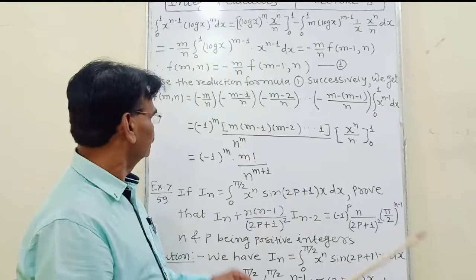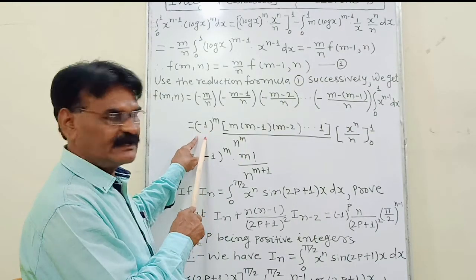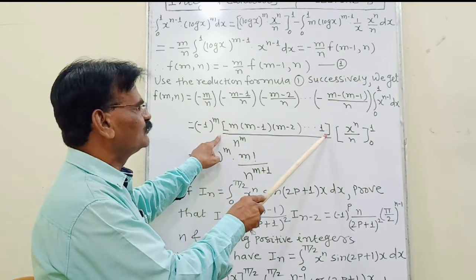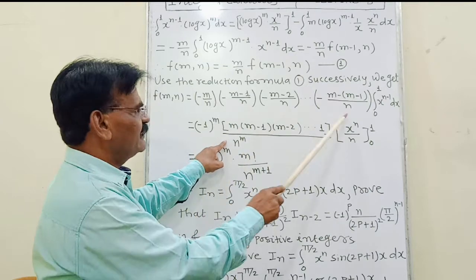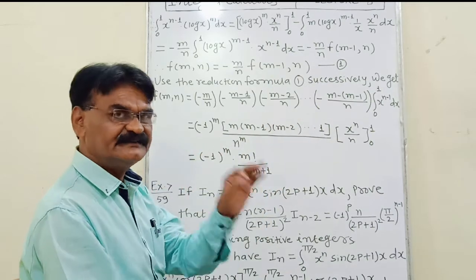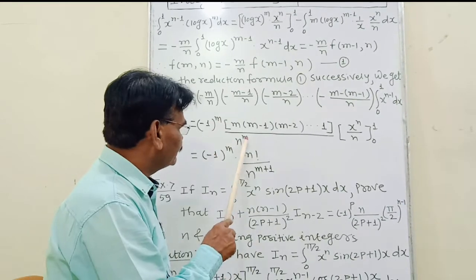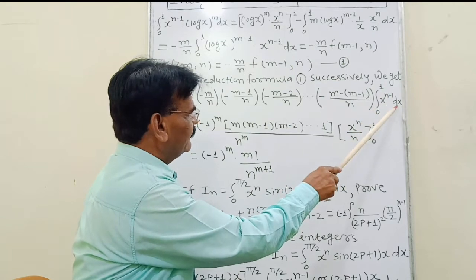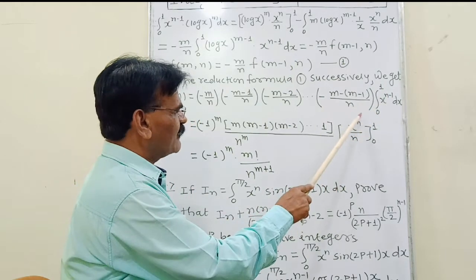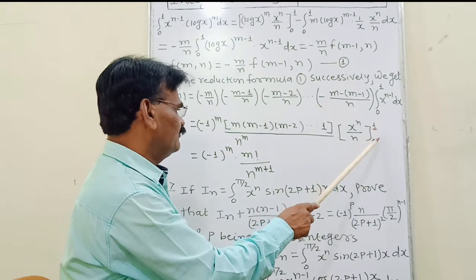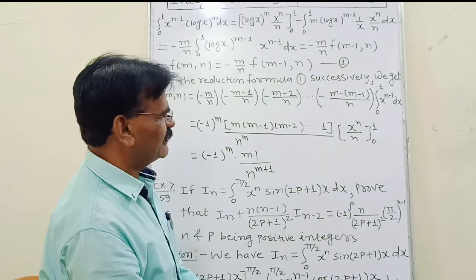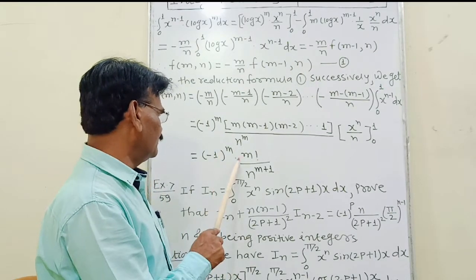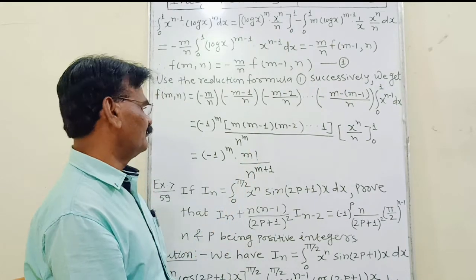The minus sign appears m times, giving (-1)^m. The remaining factors are m, (m-1), (m-2) down to 1, which is m factorial. Divided by n appearing m times, giving n^m. Then we evaluate the remaining integral from 0 to 1 of x^(n-1) dx, which equals x^n/n evaluated from 0 to 1. Substituting the upper limit gives 1/n, and the lower limit gives 0. Therefore f(m, n) = (-1)^m times m! divided by n^(m+1).